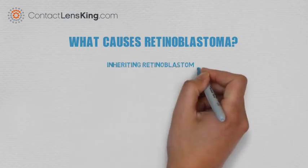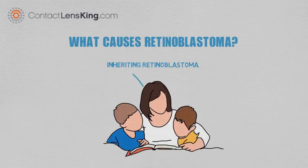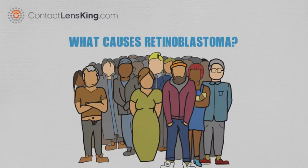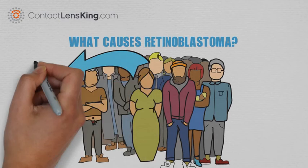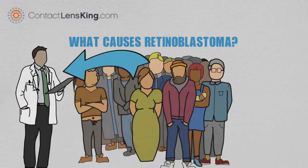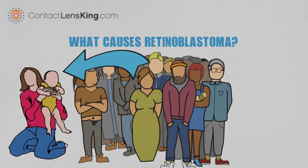Inheriting Retinoblastoma: Inheriting the genetic mutation has been suggested as one of the possible causes behind this disease. For this reason, it is suggested that families who have a history of this disease perform the appropriate genetic testing, in an effort to become informed on the level of risk to their children.